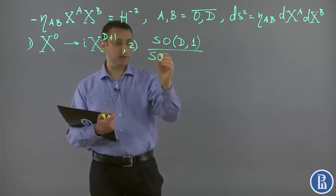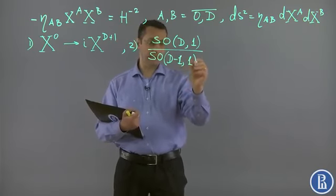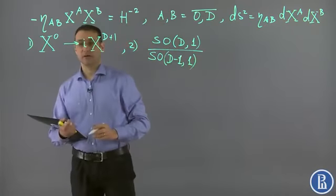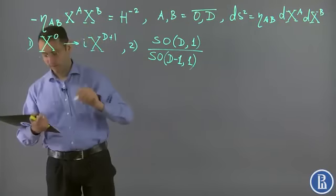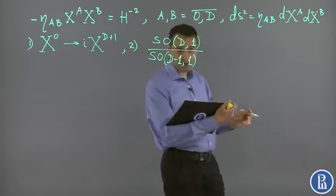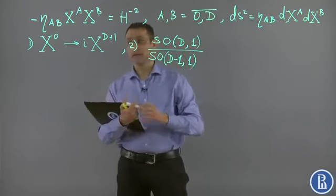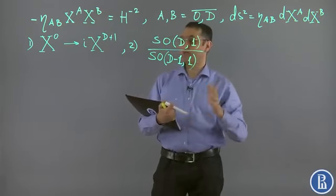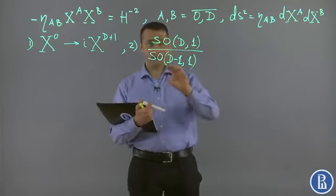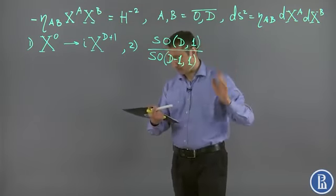SO(d-1,1) is the stabilizer subgroup of this group which doesn't move an arbitrary point of this space. This tells us that every point in this space is equivalent under the action of this group to every other, and every direction is equivalent to every other, up to the difference between space-like and time-like directions.